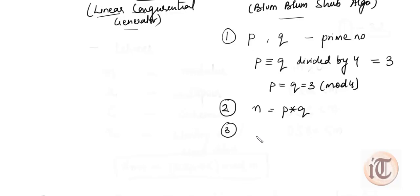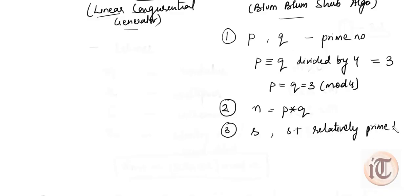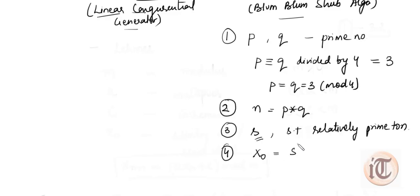The third step is to choose a random number S with the condition that it is relatively prime to N. Since N equals P times Q, this means that neither P nor Q is a factor of S. With this condition, we select the random number S. Then the fourth step is to calculate a value X₀, which equals S squared mod N.